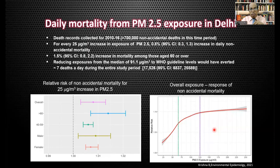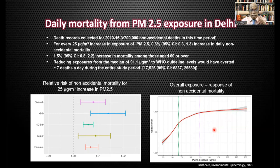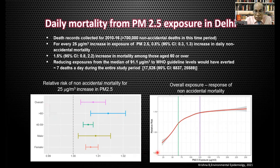Air pollution is also linked to mortality. This is a very interesting analysis from Delhi: death records collected from 2010 to 2016 — 700,000 non-accidental deaths were reported. For every 25 micrograms per cubic meter increase in PM2.5 exposure, there was a 0.8% increase in daily non-accidental deaths. Examining data over 60 years, this figure escalates to 1.5%. Reducing exposure from the median of 91.1 micrograms per cubic meter to WHO guideline levels would have averted about 7 deaths a day during the entire period. Elderly and males are more adversely affected.